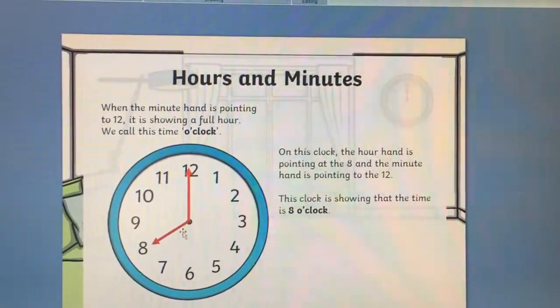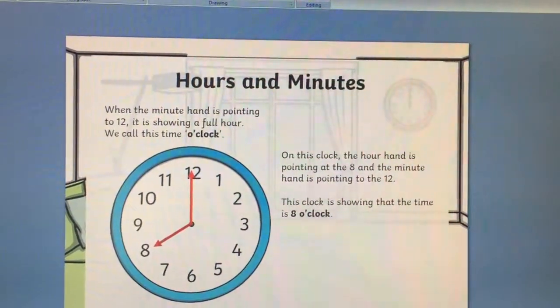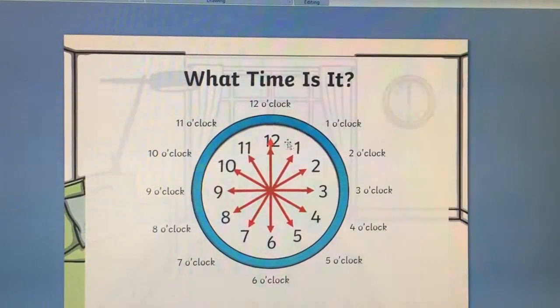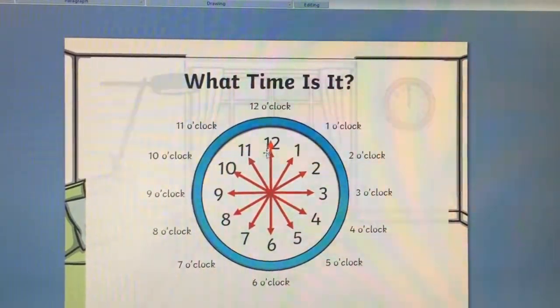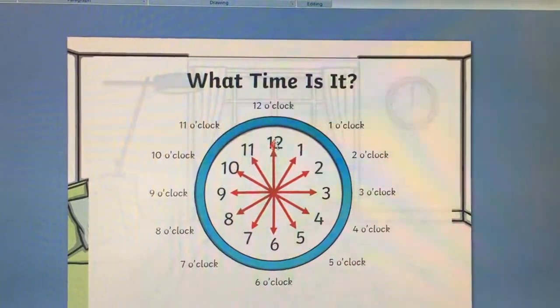Now if we move on, the small hand will always point to the hour. Can you see the big hand is pointing to 12? Now if the two hands are pointing to 12, that makes it 12 o'clock.